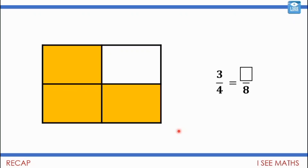Three-quarters: I've got three pieces shaded in orange out of four equal parts overall. But how many eighths would it be? What I need to do is take that part and that whole and cut it up differently to see how many eighths it is. I need to split into eight pieces, so I now have double the number of pieces — three-quarters equals six-eighths. Those two fractions are equivalent.